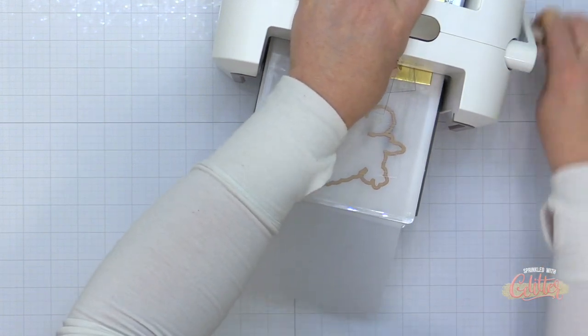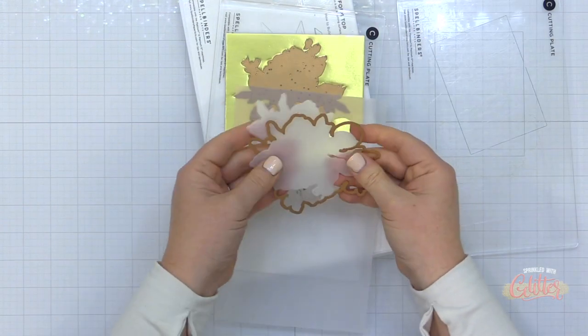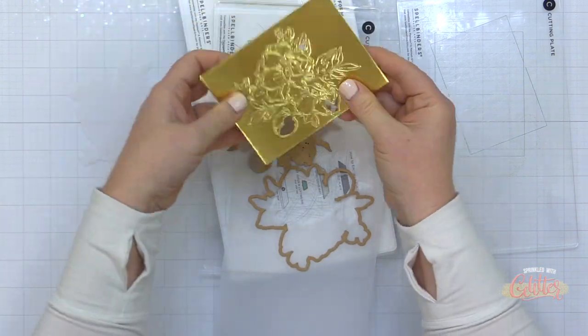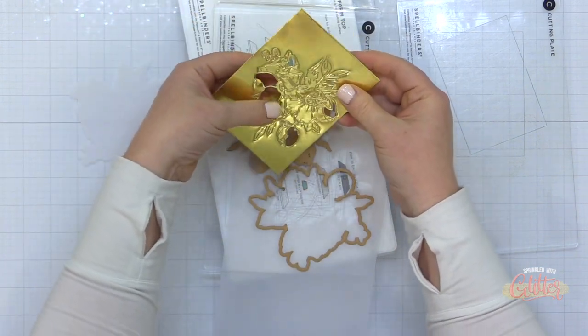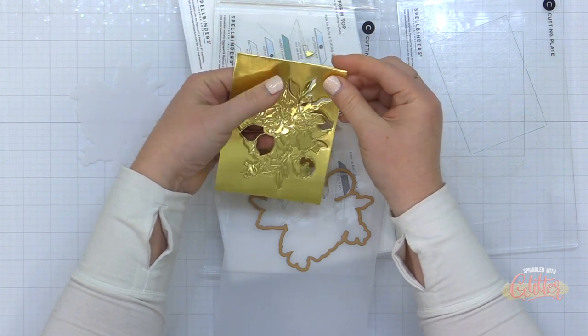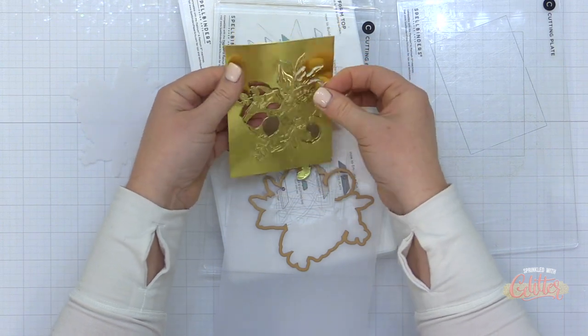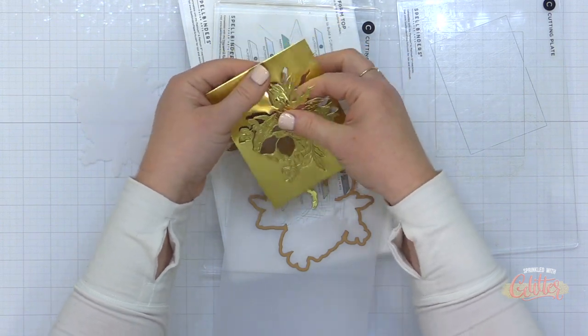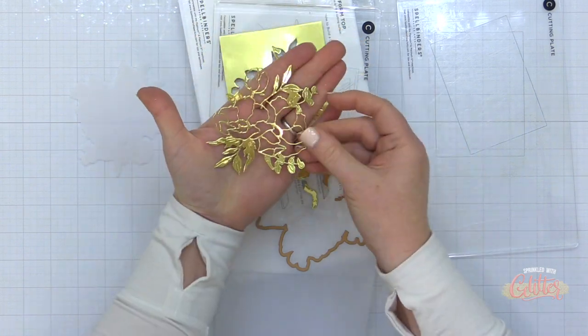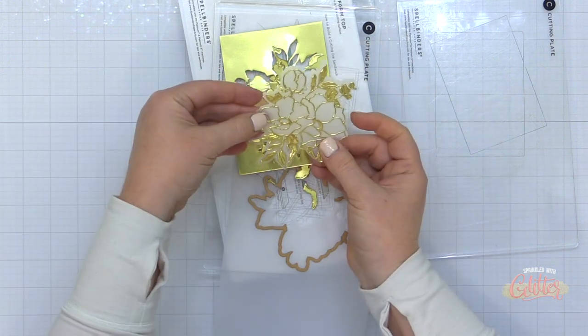So I've finished off my die cutting sandwich with a second cutting plate which is C, and I've just cranked that through my Platinum 6, and you can see I have a beautiful shadow layer and this piece here is just a stunner. Now I've seen some projects that include some kind of die cut inlay with this that are just absolutely beautiful. I am going to use it on its own layered on top of the shadow because I just think there is something so gorgeous about the intricacy of this die cut.